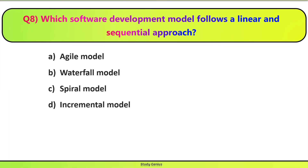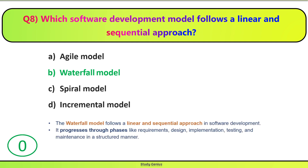Question 8. Which software development model follows a linear and sequential approach? Correct answer is B. The Waterfall model follows a linear and sequential approach in software development. It progresses through phases like requirements, design, implementation, testing, and maintenance in a structured manner.